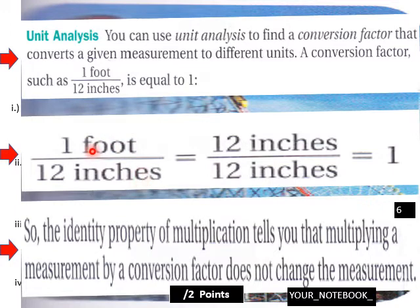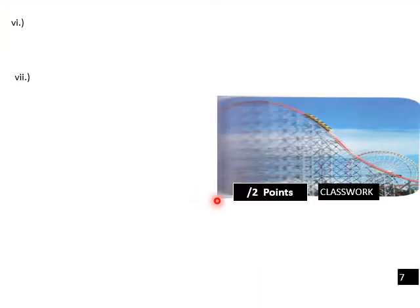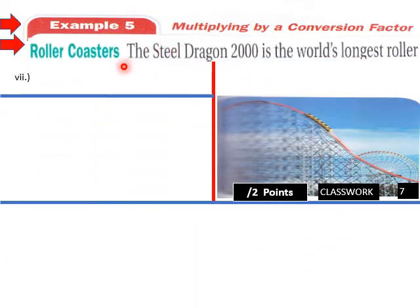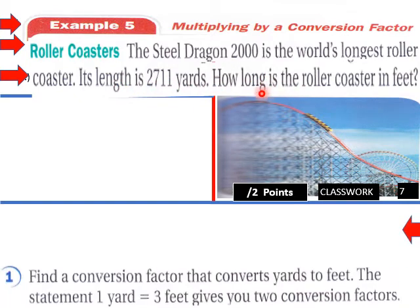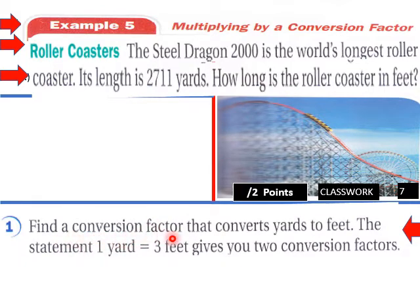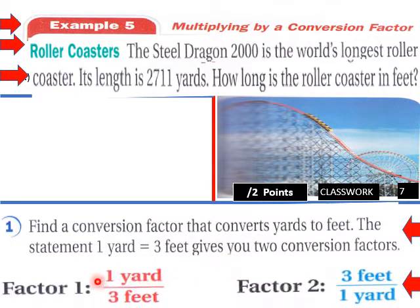When you have a fraction like one foot over 12 inches, that's still one, but you can change units using conversion factors. The Steel Dragon 2000 is the world's longest roller coaster, with a length of 2,711 yards. How long is it in feet? We need a conversion factor that converts yards to feet. The statement one yard equals three feet gives two conversion factors: factor one is one yard over three feet, and factor two is three feet over one yard — both equal one.